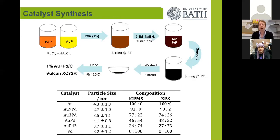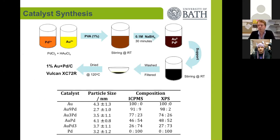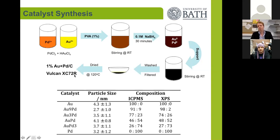So the first thing we did was prepare a range of materials by a sol immobilization method. To do this, we take palladium and gold precursors, add a polymer stabilizer to control nanoparticle growth, and then add a strong reducing agent such as sodium borohydride. This initiates fast reduction and nucleation of nanoparticles, which become capped by the PVA polymer. At this point, we can add a catalyst support material — in this study, Vulcan carbon XC72R — or use the colloidal solution directly as a catalyst.